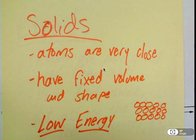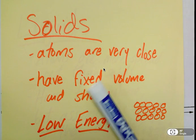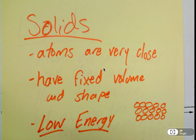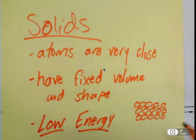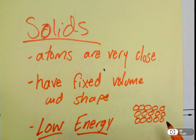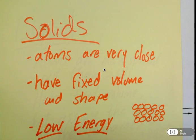Our first state of matter are solids. In a solid, you have atoms that are very close together and tightly packed. These have a fixed volume and shape. So this marker is a solid - it's marker shaped, it always is, regardless of what I do with it, and it takes up a certain amount of space. Solids have relatively low amounts of energy. Remember, atoms are always moving around and vibrating, but in solids they're not moving quite as much. They're never perfectly still, but they just like to hang out together.